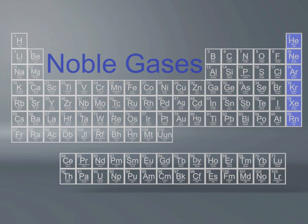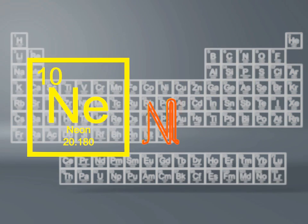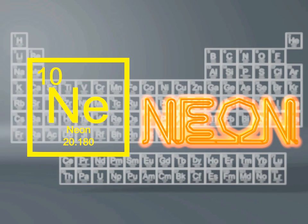The noble gases are generally associated with the large glowing signs that can be seen in cities at night. Neon is an example of a noble gas that is used in many signs in order to make the sign glow and pop out in the night.